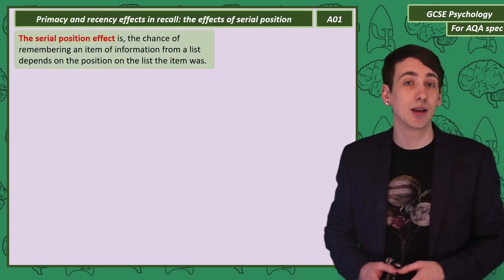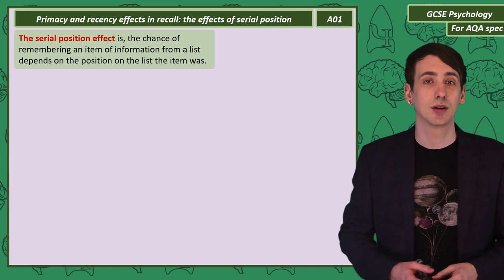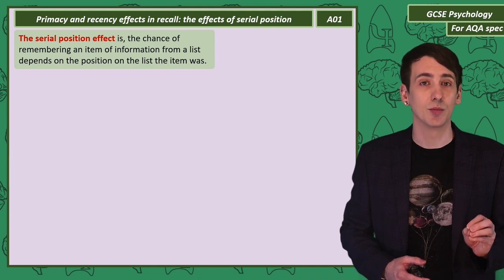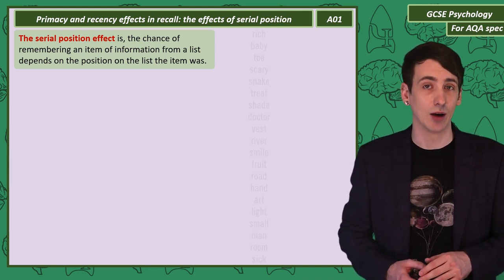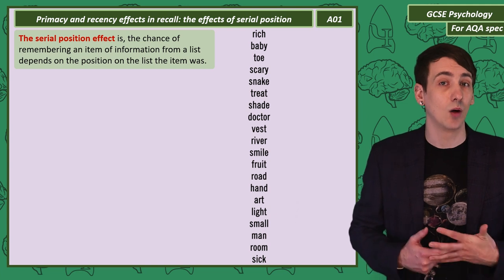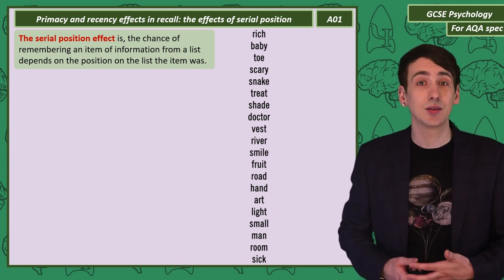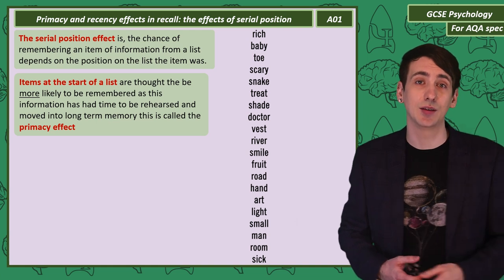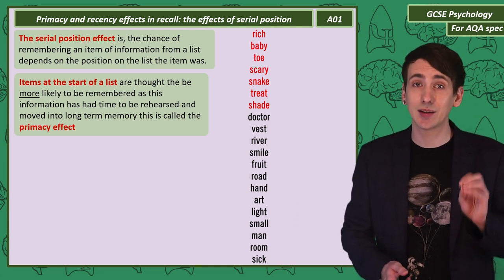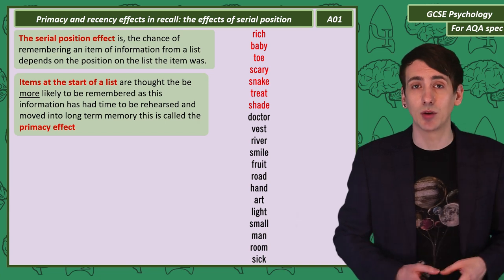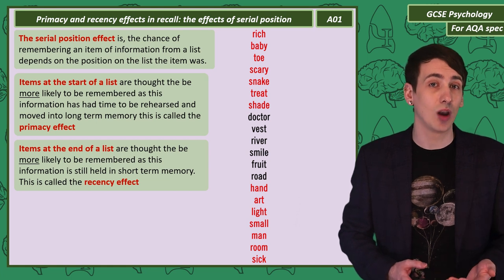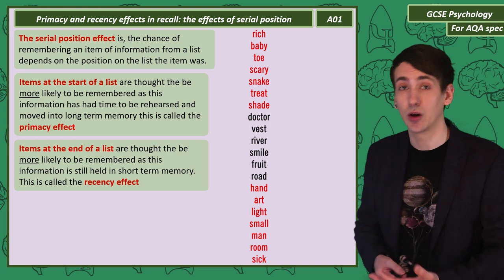An effect we need to understand in memory is called the Serial Position Effect. Here's a list of 20 items — pause the video, read them out loud in order, then look away and try to write them all down. You might have found that your recall of a word depended on its position on the list. The Primacy Effect suggests words at the start of the list were more likely to be remembered, because your brain had time to rehearse those words and put them into long-term memory. The Recency Effect suggests items at the end of the list were more likely to be remembered because those words were still in short-term memory when you started writing them down. But the middle items should have been the least likely to be remembered, as they were less likely to be rehearsed into long-term memory and would have been displaced in short-term memory by more recent words.